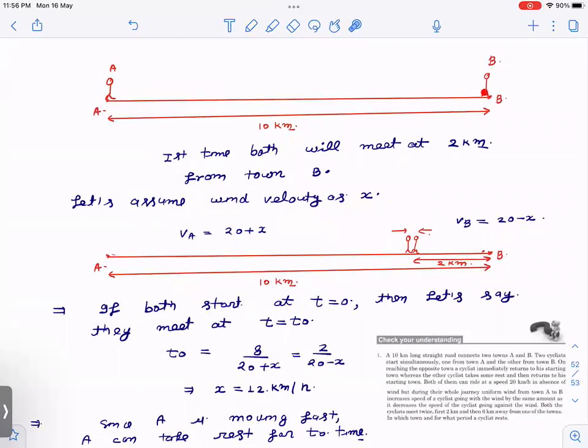Distance is 10 kilometers. It is given that wind is blowing from A to B, so the velocity of person A will be more as compared to B. They will first meet when A is going to B and B is coming towards A. They will meet somewhere here. Two kilometers. So let us say they meet here at two kilometers. This is given in the question.